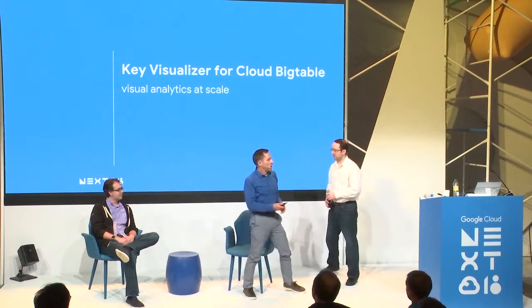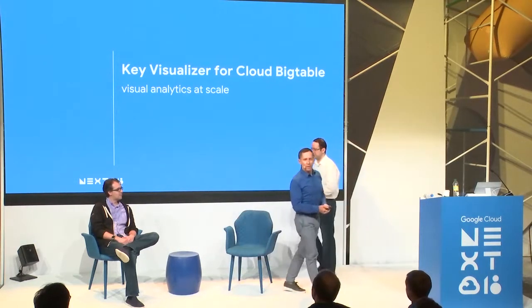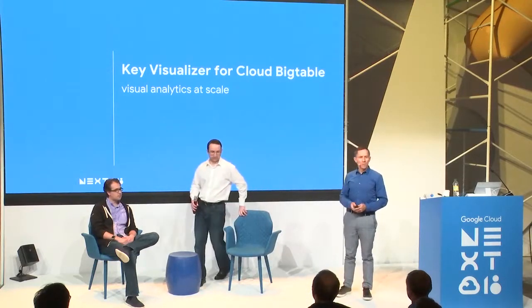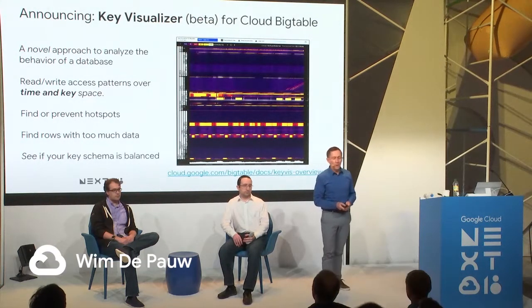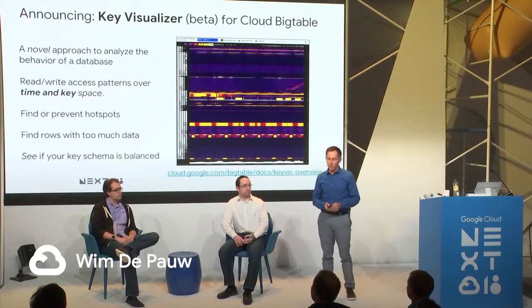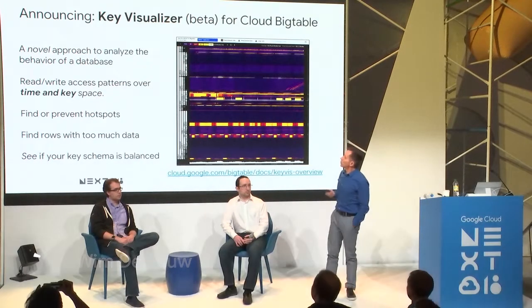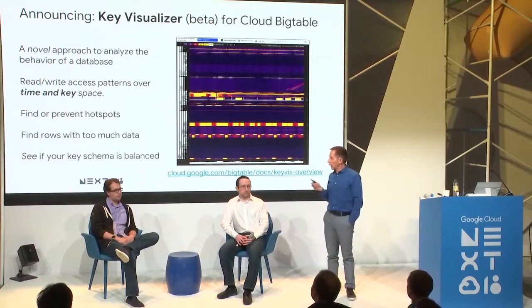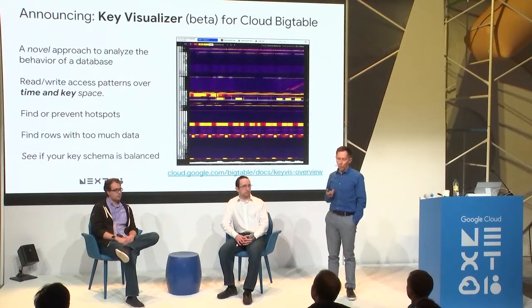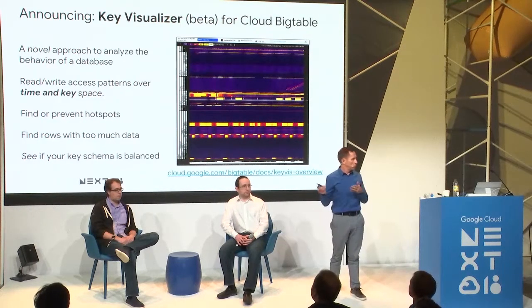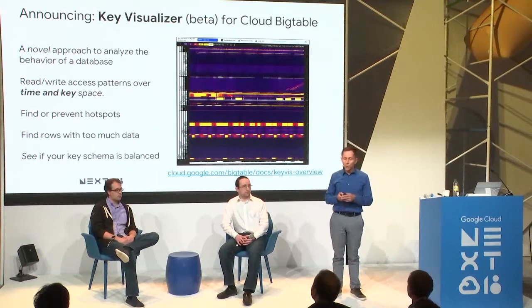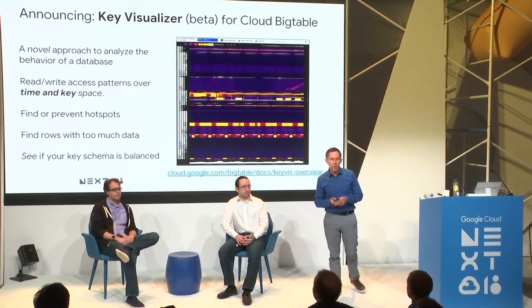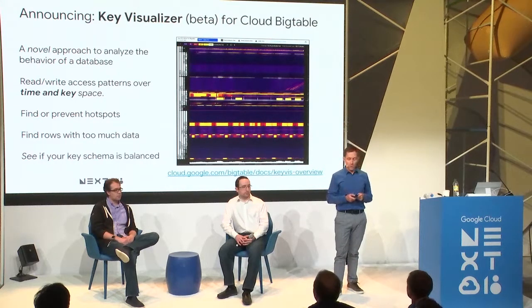I'm Wim de Pau, engineering manager of the visual analytics team in New York. We're proud to announce Key Visualizer for Cloud Bigtable — a novel approach to analyzing the behavior of your table. Typical line charts only show one dimension. Key Visualizer shows read and write access patterns both over time and across the key space, helping you find and prevent hotspots, find rows with too much data, and see if your key schema is balanced.